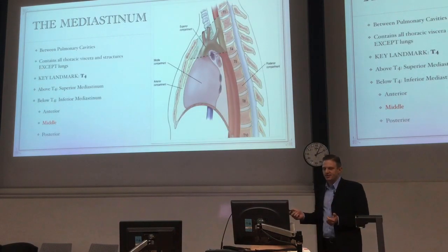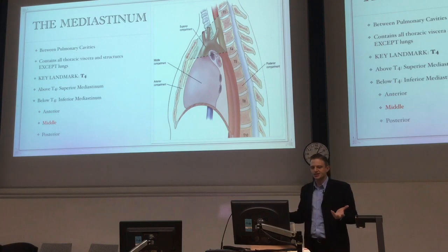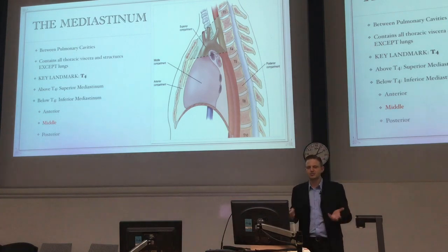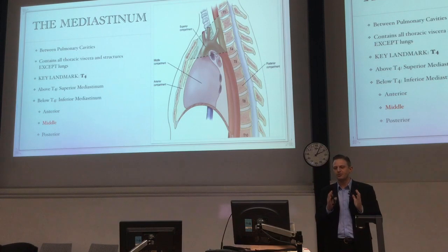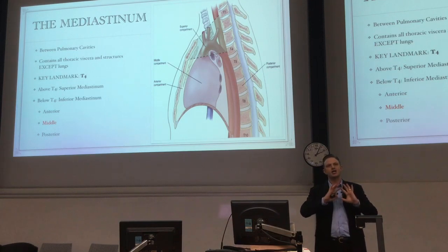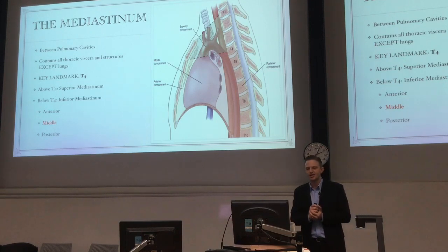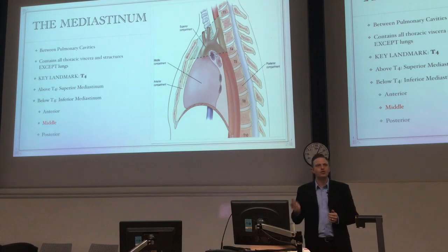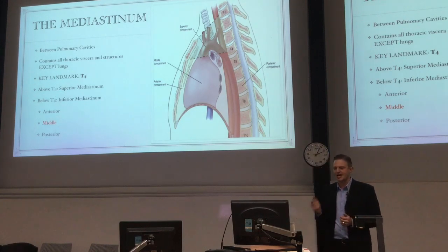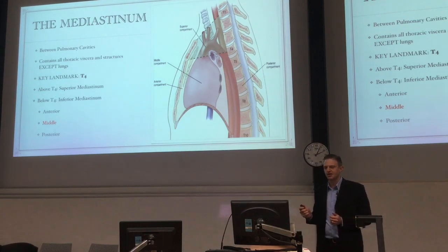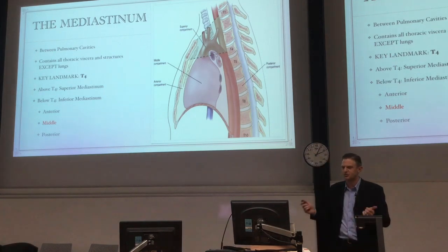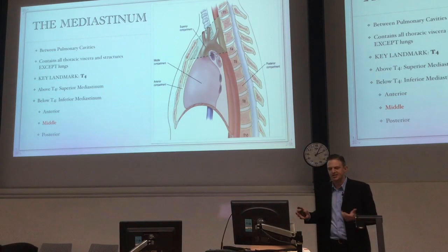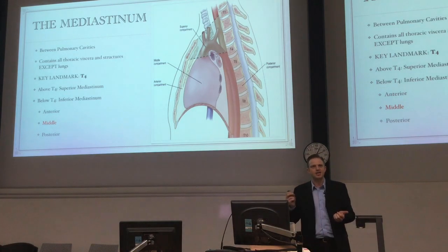The mediastinum — just revision from foundations — is Latin for 'middle septum.' It's the space between the two pulmonary cavities, lined by the pleura of the mediastinum. It contains all the thoracic viscera except the lungs. So it contains the heart, the blood vessels, the nerves, the esophagus, the trachea, the thoracic duct, and other things. And again, its key landmark is T4.